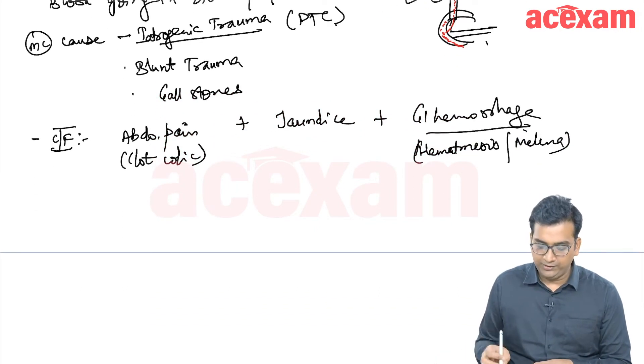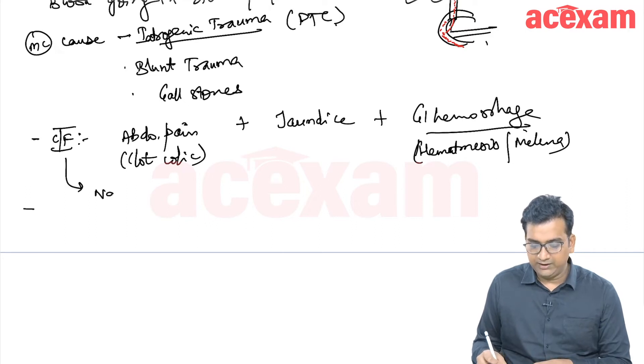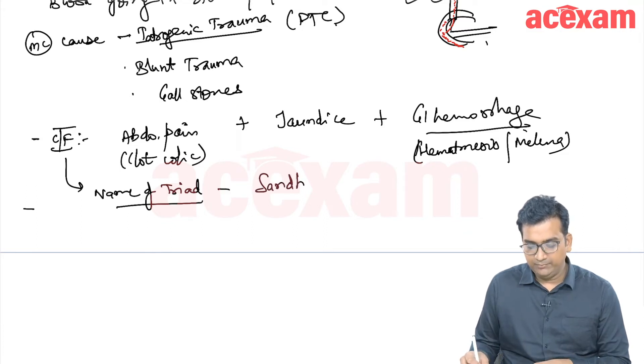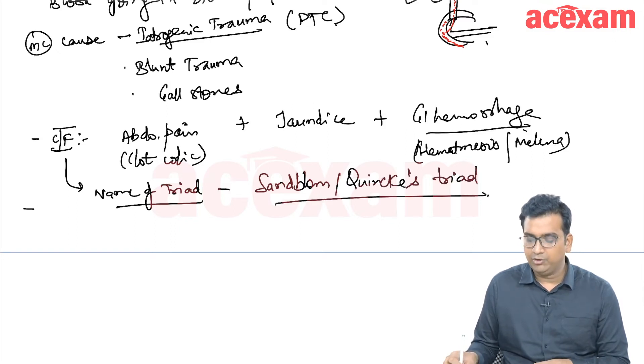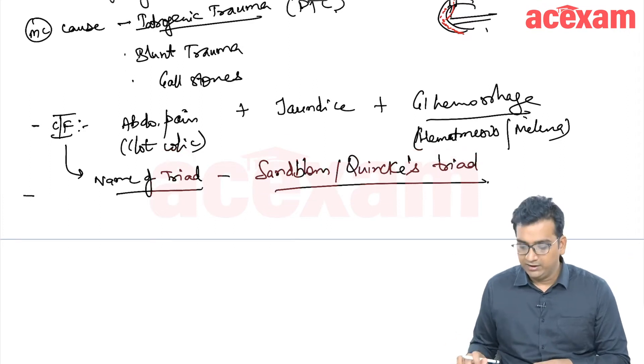Two important and frequently asked questions. What is the name of this triad? It is known as Sandblom or Quincke triad. So Quincke triad or Sandblom triad is seen in hemobilia.